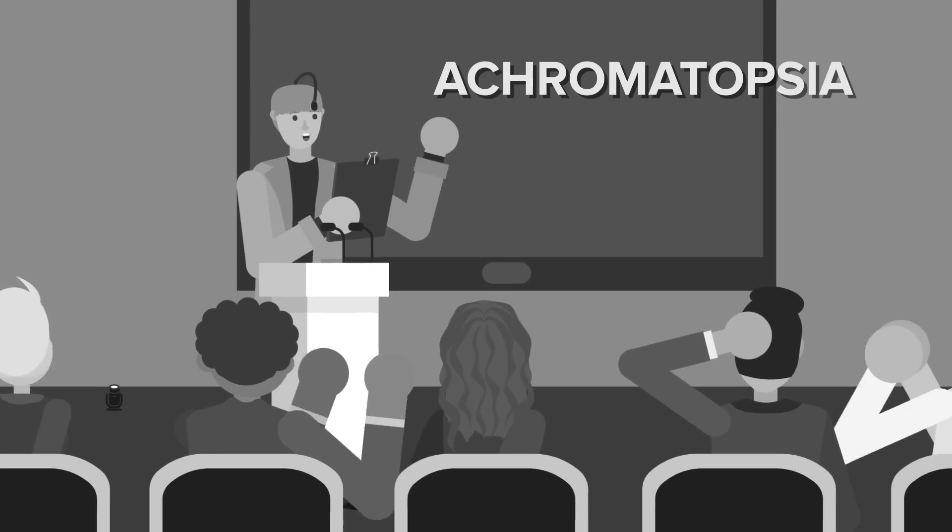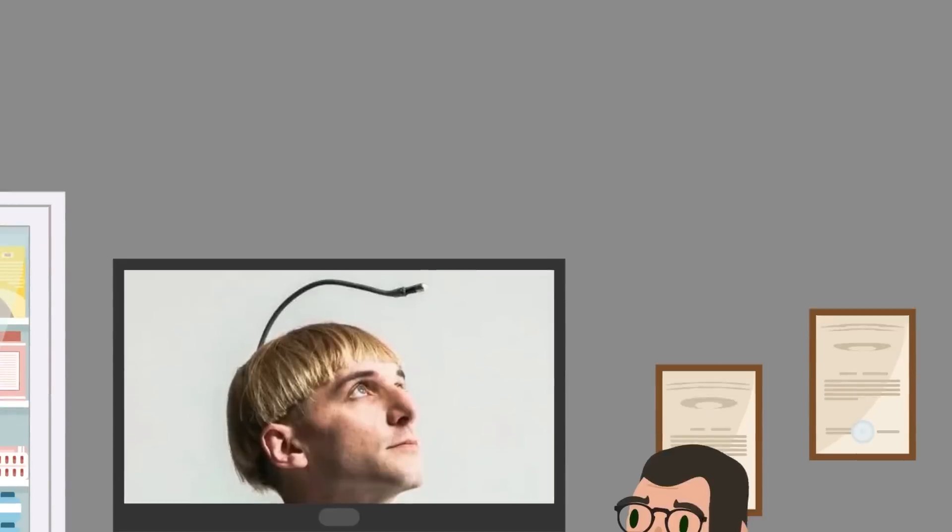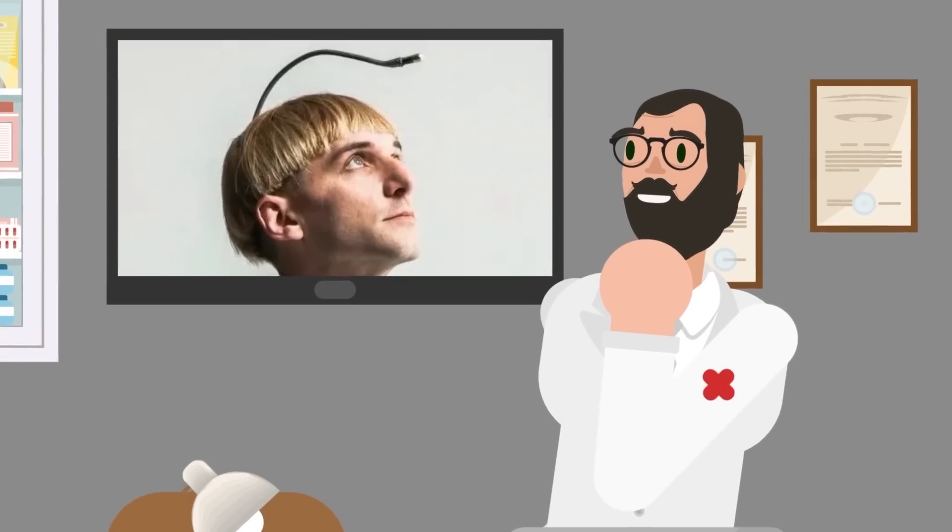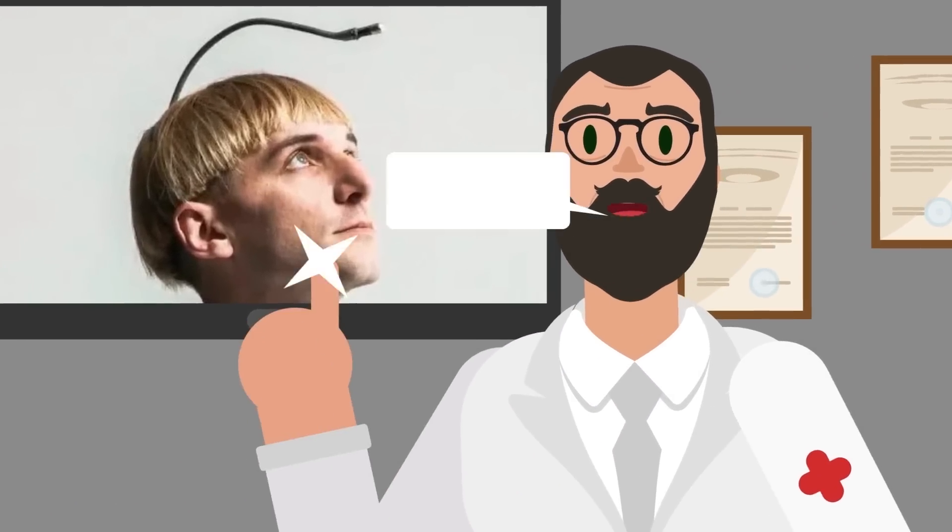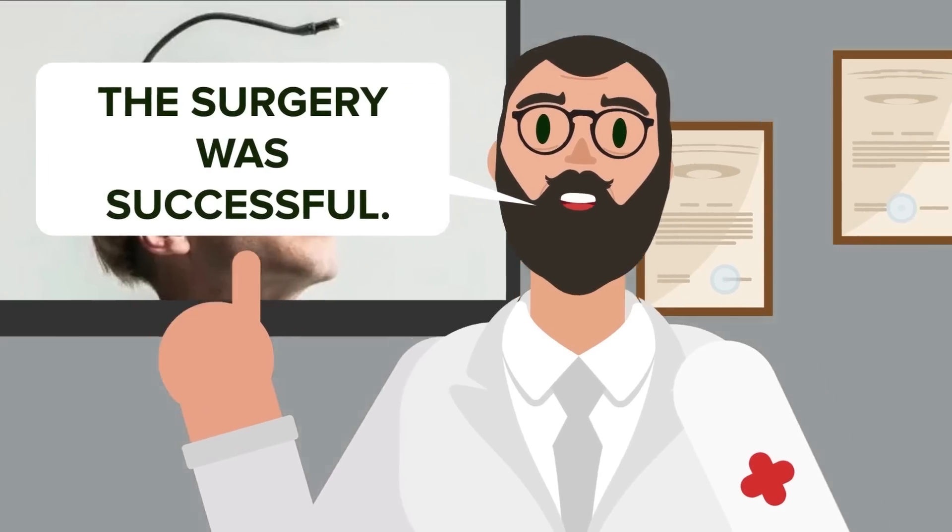Harbison was born with achromatopsia, meaning he is completely colorblind and sees the world in grayscale. This wasn't necessarily a problem for Harbison, but he wanted to experience more, so he hacked his own biology and implanted an antenna-like structure into his head.